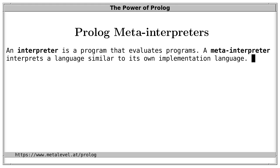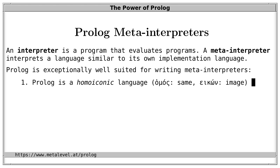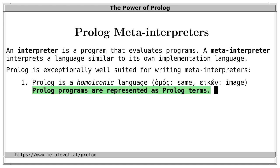Different programming languages are differently suited for writing meta-interpreters. Prolog is exceptionally well suited because, first, Prolog is a homoiconic language — from Greek 'homos' meaning same, and 'icon', image. This means that Prolog programs are represented as Prolog terms, so a built-in data structure is used to represent programs.